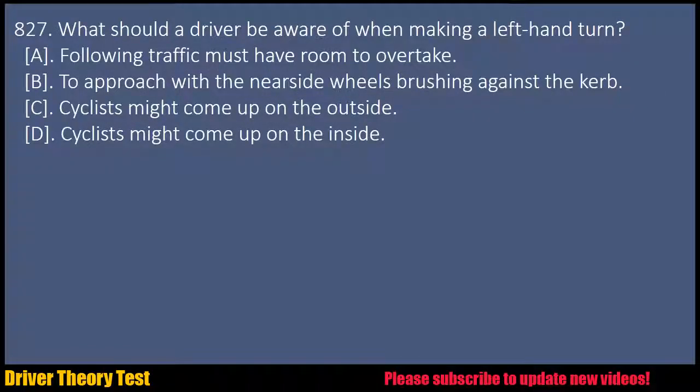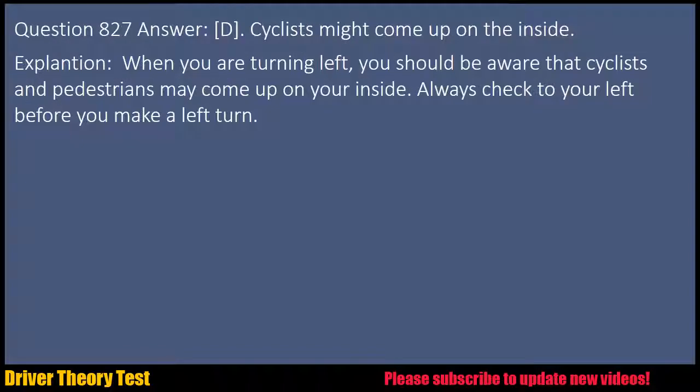Question 827: What should a driver be aware of when making a left-hand turn? A. Following traffic must have room to overtake. B. To approach with the nearside wheels brushing against the curb. C. Cyclists might come up on the outside. D. Cyclists might come up on the inside. Answer: D. Cyclists might come up on the inside. Explanation: When you are turning left, you should be aware that cyclists and pedestrians may come up on your inside. Always check to your left before you make a left turn.